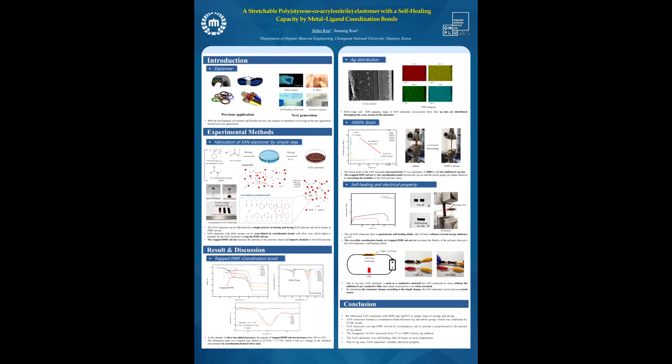We performed TGA analysis to confirm the DMF solvent trapped in SAN elastomer. As the amount of silver ion added increases, the amount of trapped DMF solvent increases from 10% to 33%.